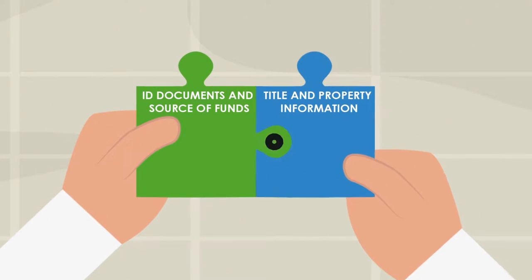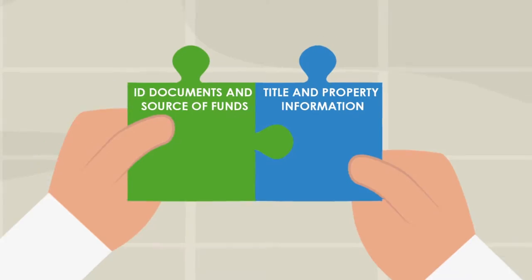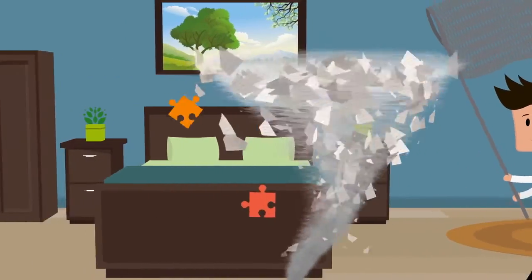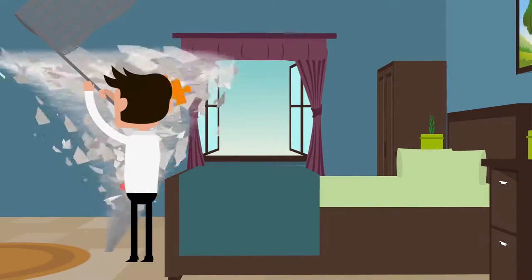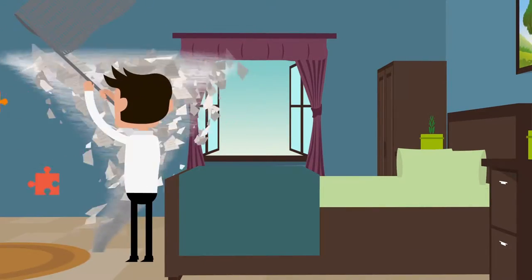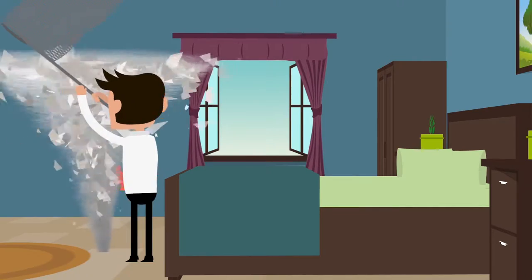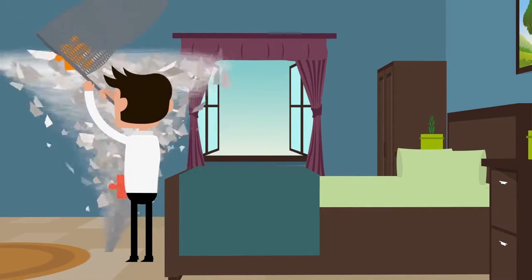When you sell your property, your conveyancer will need to get a copy of the title deeds and you'll need to provide information about the property. By doing this before a buyer is found, your conveyancer can help you deal with any missing paperwork in plenty of time. This can shave as much as 11 days off the conveyancing process later on.